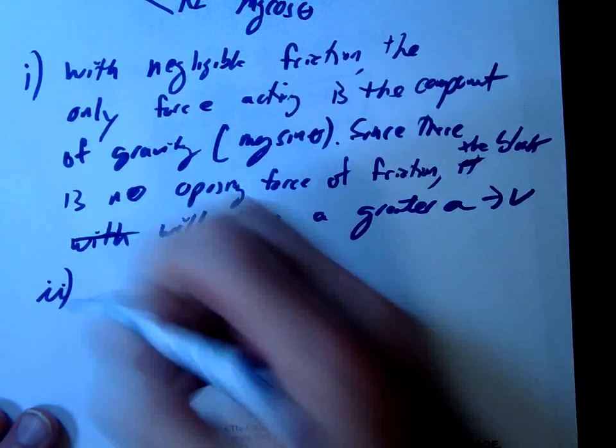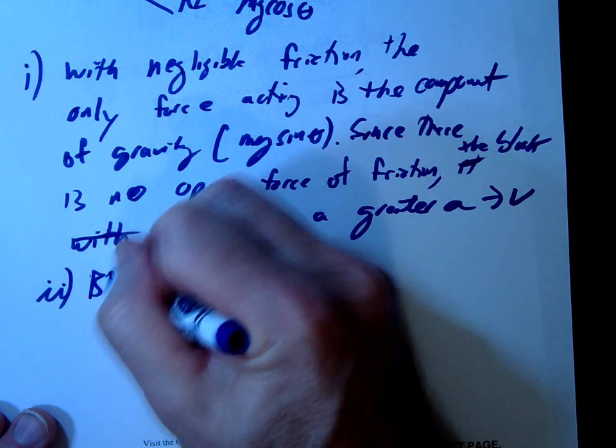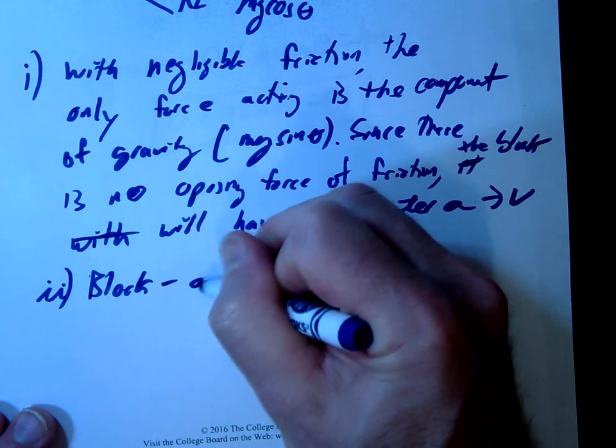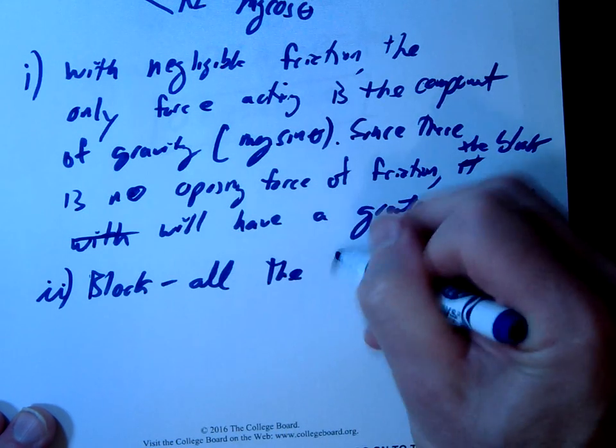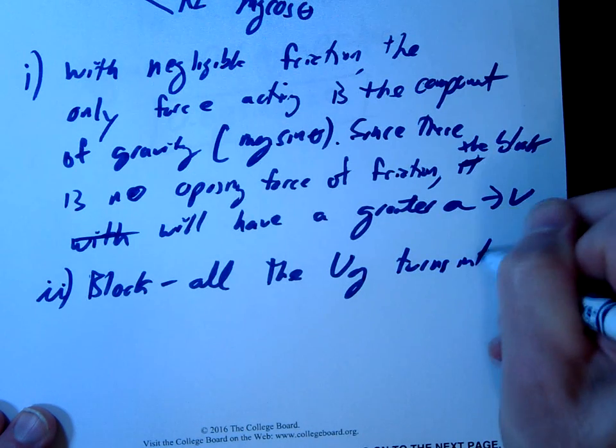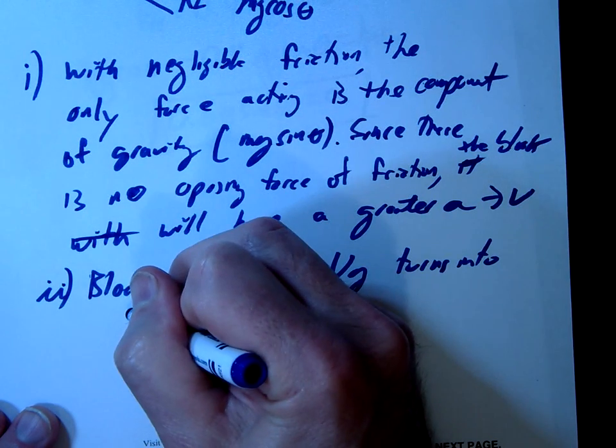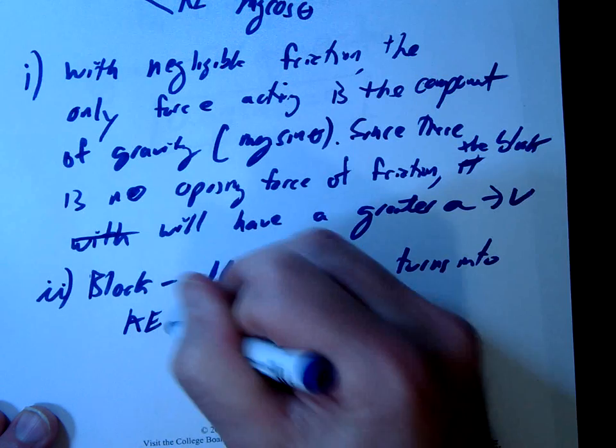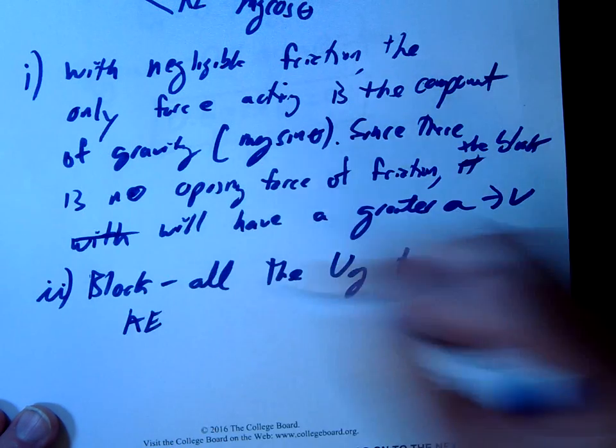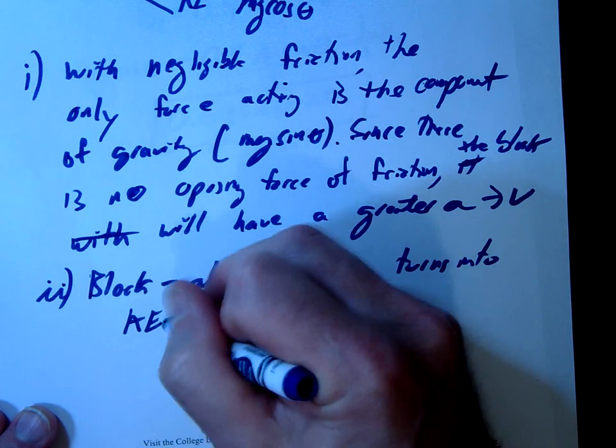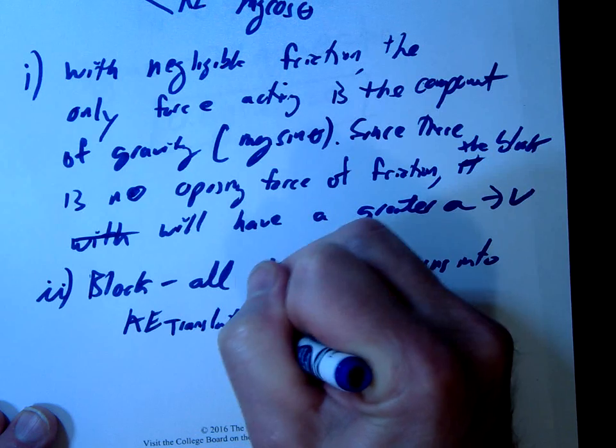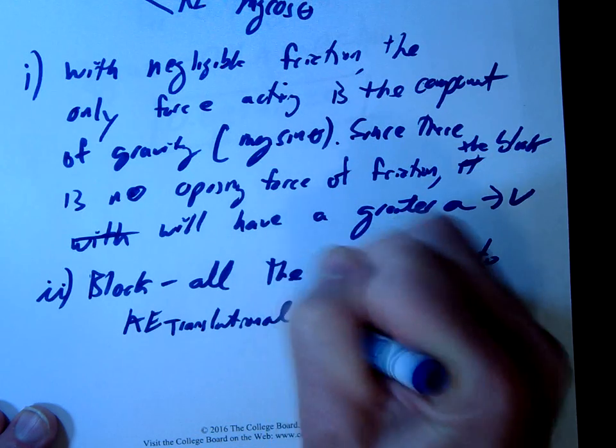So how would we explain that? Well, with the block, all the potential energy turns into linear kinetic, or translational kinetic. With the wheel, the UG is distributed or split between translational KE and rotational KE.